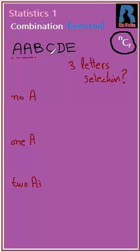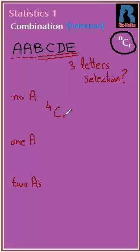If there is no A, it means from the remaining four letters B, C, D, E we have to select three of them. So we need to choose three from four, which means it will be 4C3, and this equals 4. If there is one A, then we need two more from B, C, D, E.